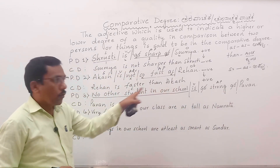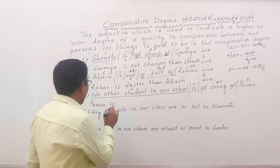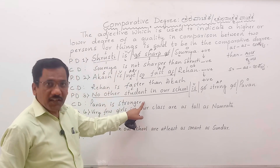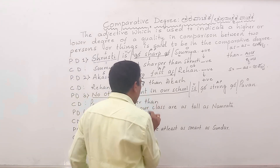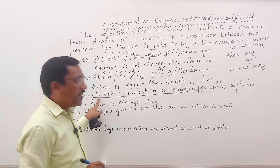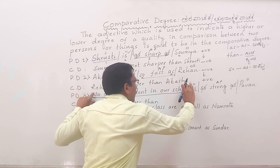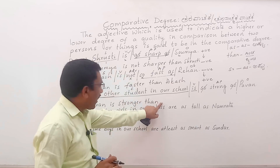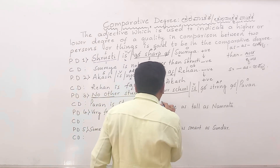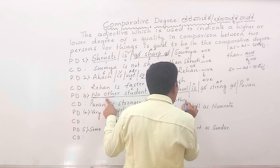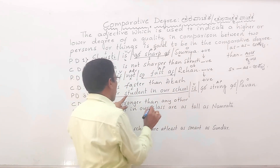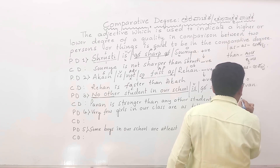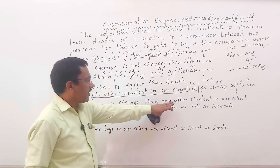The 'as...as' are cancelled and 'strong' becomes 'stronger' in comparative form. After writing 'stronger', we write 'than'. After 'than', we look at the beginning of the positive degree sentence — 'no other' is there. 'No other' changes to 'any other', and the rest of the words are repeated as they are: 'any other student in our school'. So the final sentence is: Pavan is stronger than any other student in our school.